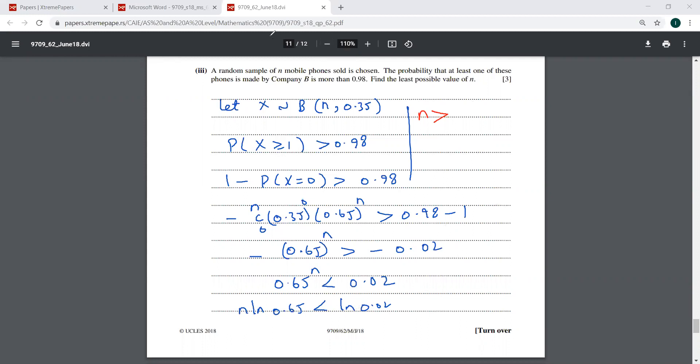So this is going to be ln 0.02 over... Please use your calculator and tell me what do you get. 9.08. So the smallest possible... 9.08. This is 9.08.